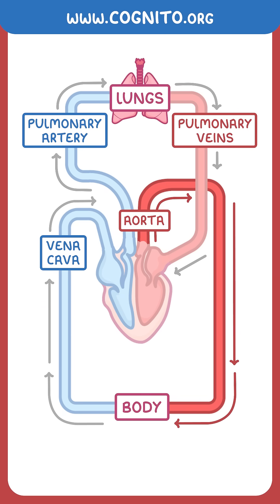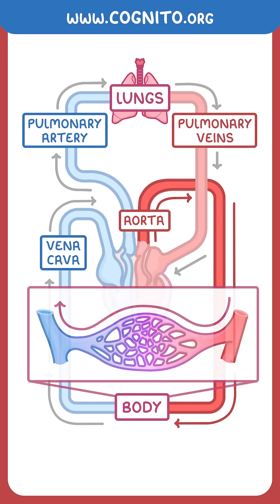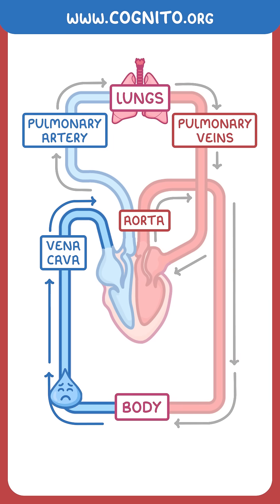As it leaves the heart, the oxygenated blood passes through smaller arteries and then capillaries until it passes back into tiny veins, then progressively bigger and bigger veins until it passes into the vena cava and the whole cycle starts again.